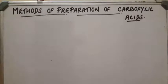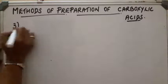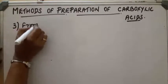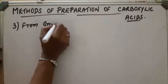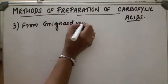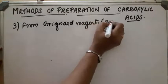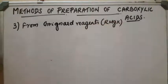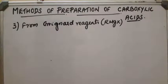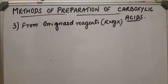Third method: from Grignard reagents (RMgX). Grignard reagent with dry ice — that is CO2 — forms a salt of carboxylic acid first, which in turn gets converted into the corresponding acid on acidification with mineral acids.